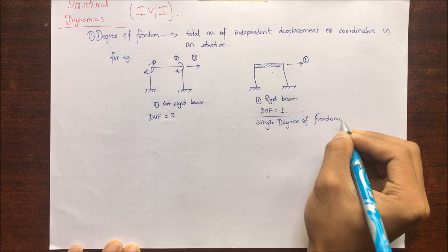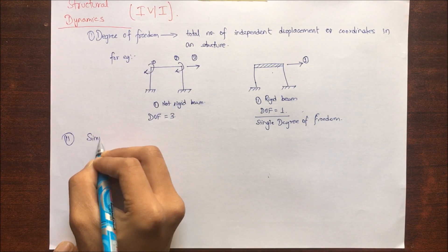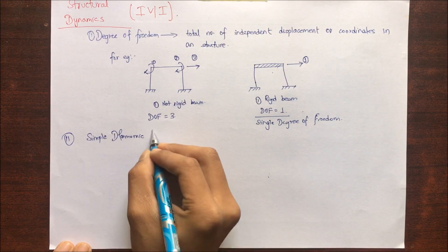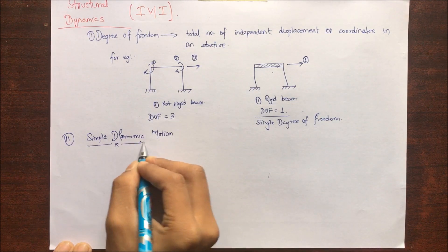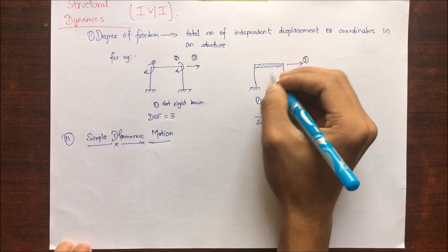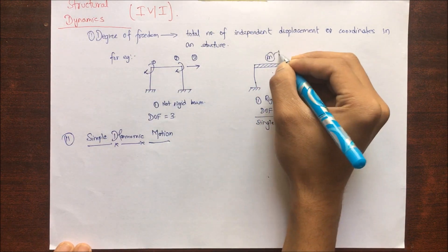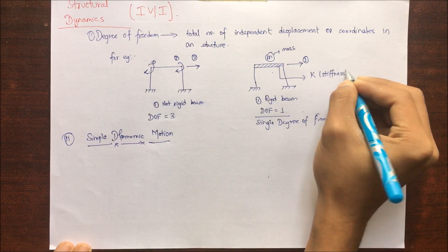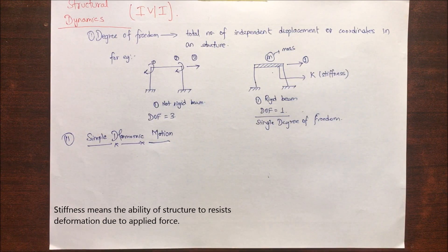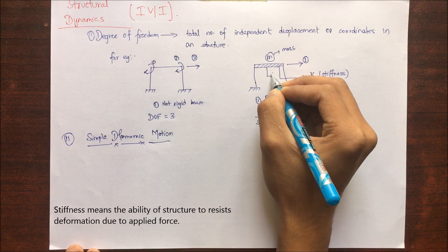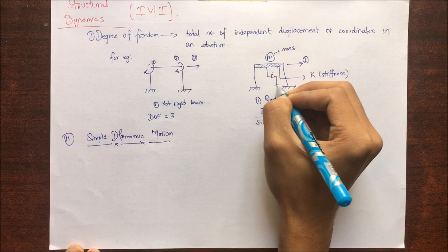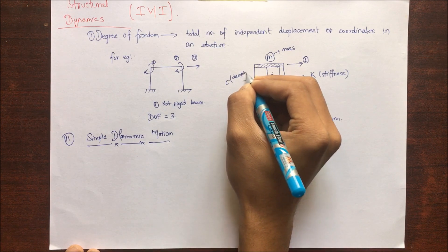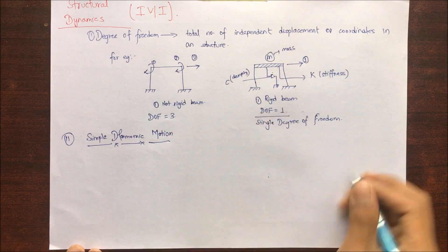For single degree of freedom, I will use simple harmonic motion to represent it. We need simple harmonic motion in structural dynamics because when a structure is subjected to a force, it oscillates for a certain time — and that behavior is represented by simple harmonic motion. Considering a structure of mass m, due to its mass it possesses some stiffness represented by k, and due to oscillation the accumulated energy is dispersed through the damping phenomenon, represented as C.